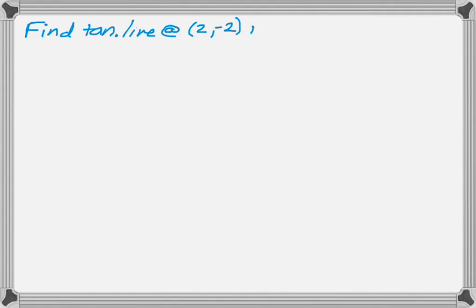We want the tangent line at the point (2, -2) to this relation here, where I'm confident I would not be able to solve for y. Okay, so again, we're going to use implicit differentiation.